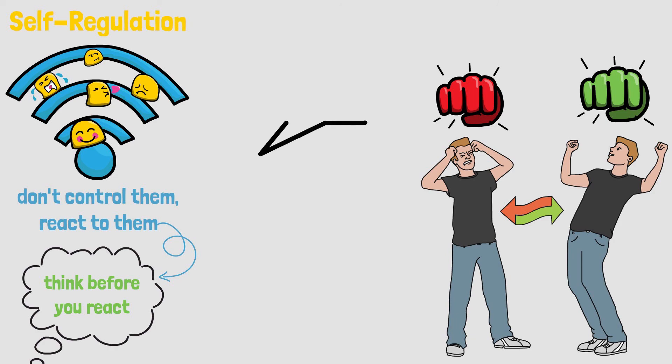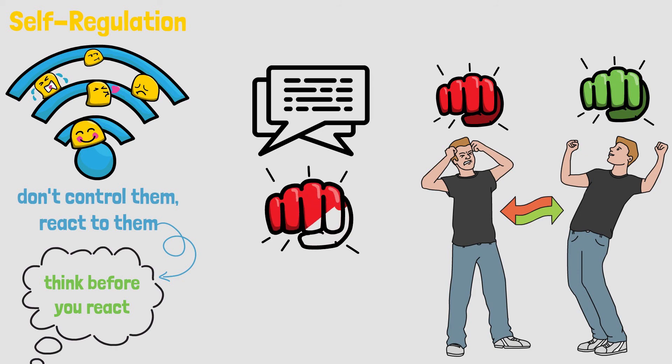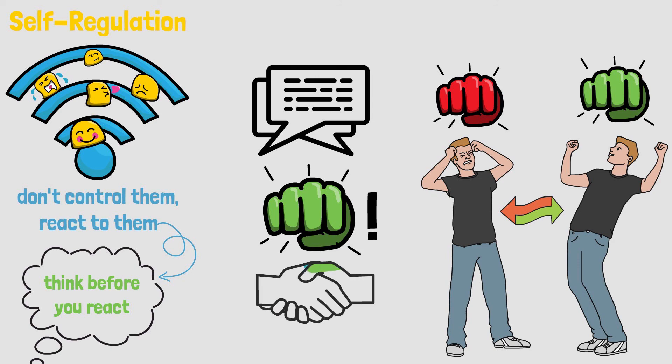For example, if you discuss with someone and you get angry because he has another opinion than you, recognize that emotion and decide if it is helpful for the discussion or not. In this case most likely it's not. So try to calm down to discuss on a normal and respectful level again. Who knows, maybe you change your opinion after hearing and understanding your counterpart's opinion.